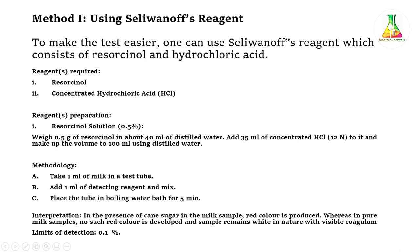For interpretation: if the milk is adulterated with cane sugar, you will see a brick red color appearance in the milk. This red color develops and indicates the presence of cane sugar. Now, every test has a limitation — if the concentration is below a certain level, the test will not be positive. The minimum concentration at which our test gives a positive result is called the limit of detection. For this cane sugar test, the limit of detection is 0.1%, meaning if 0.1% or more cane sugar is present, the test will be positive.